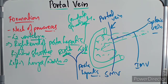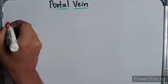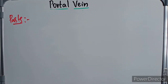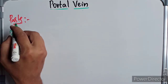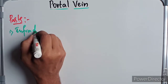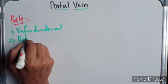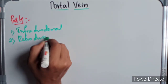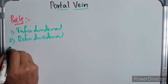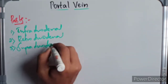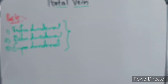Now let's discuss the parts and relations of the portal vein. For purposes of description, the portal vein is divided into three parts: the infraduodenal part, the retroduodenal part, and the supraduodenal part.